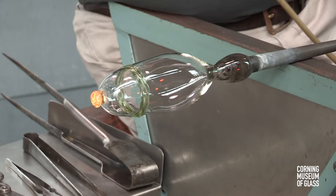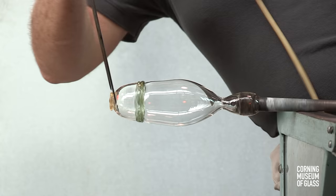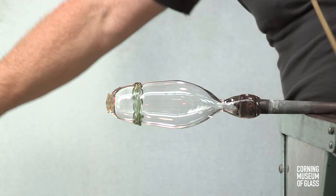A small bit of clear glass is added to the tip, and tooled to form a merese. This will be used to join the knop and the rest of the vessel.